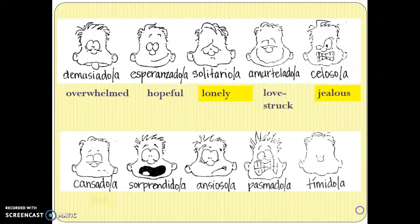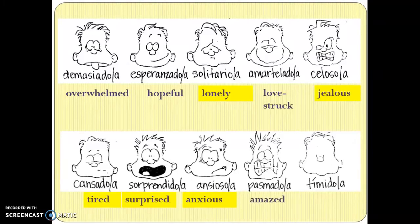'Cansado' means tired — you need to know that one. 'Sorprendido' is a cognate meaning surprised — you need to know that one. 'Ansioso' is a cognate meaning anxious — you need to know that one. 'Pasmado' means amazed — that face maybe looks more like frightened, but 'pasmado' means amazed. You don't have to know that one. And 'tímido' looks like timid, but most people say 'shy' instead. Notice there's an accent over the first I.